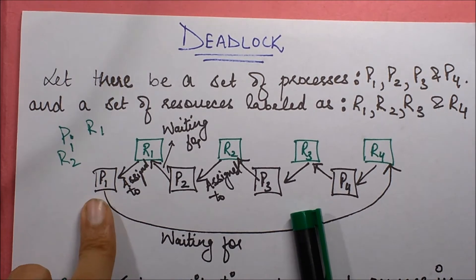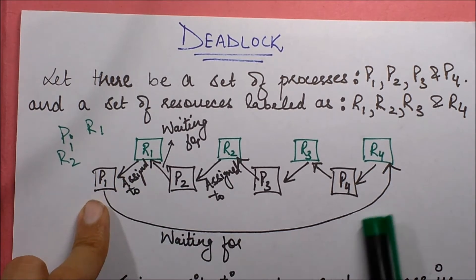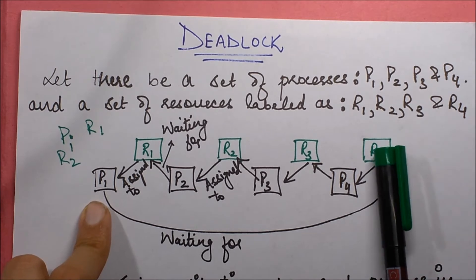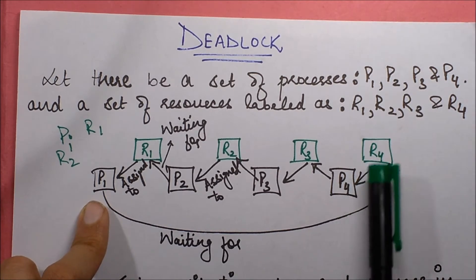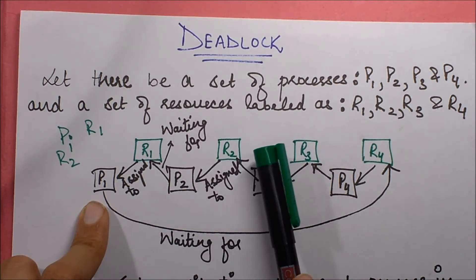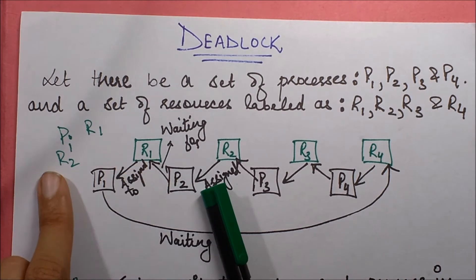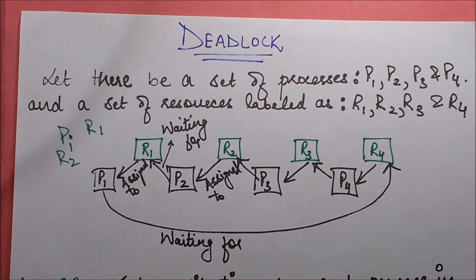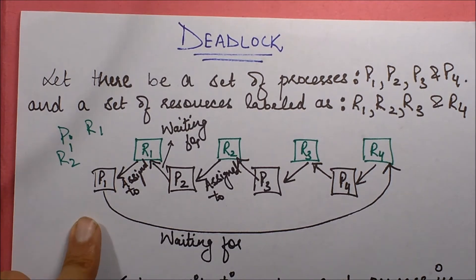In this scenario: R1 is assigned to P1, and P1 is requesting R4. But R4 is assigned to P4, and P4 is requesting R3. R3 is assigned to P3, and P3 is requesting R2. R2 is assigned to P2, and P2 is requesting R1. So all these processes are requesting resources that are held by other processes, meaning none of them will be able to complete.